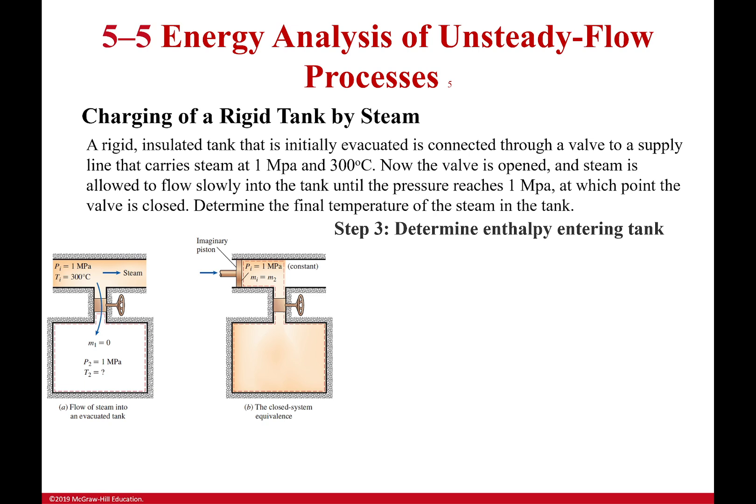Now, how do I figure out the enthalpy entering the tank? Well, it tells us that it's at 1 MPa and 300 degrees Celsius. Nice round numbers. It's steam. I'm guessing that this is superheated. So, I'm not going to show this to you, I've shown you several times in the past few problems, but we would just go to our superheated tables, I'd find 1 MPa, I'd find 300 degrees Celsius, and then I would go and get the enthalpy, which would be 3051.6 kJ per kilogram. So, that's my enthalpy flowing in, and that's going to be equal to my internal energy of the closed tank.